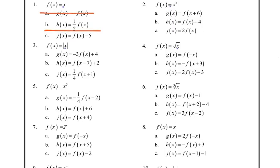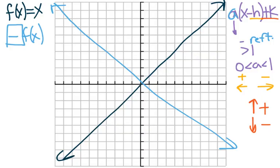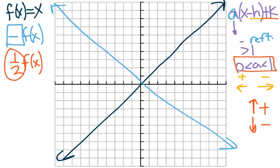Part b: notice it's one-half times f(x). Once again, that's dealing with the a part, and it's in between — so it means it's a horizontal stretch, like we're stretching this line out to the left and to the right by one-half. It's actually like we think of that space, cutting it in half. So I'd end up doing it about right there.